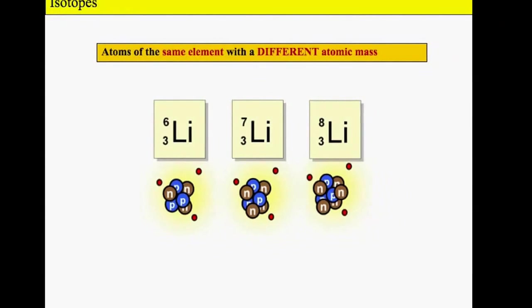This is on isotopes. Isotopes are atoms of the same element with a different atomic mass. Here's an example. These are all isotopes of lithium. They've all got the same atomic number, three. If they didn't, they would no longer be lithium. If they added a proton, they wouldn't be lithium anymore. They've got a different number of neutrons.